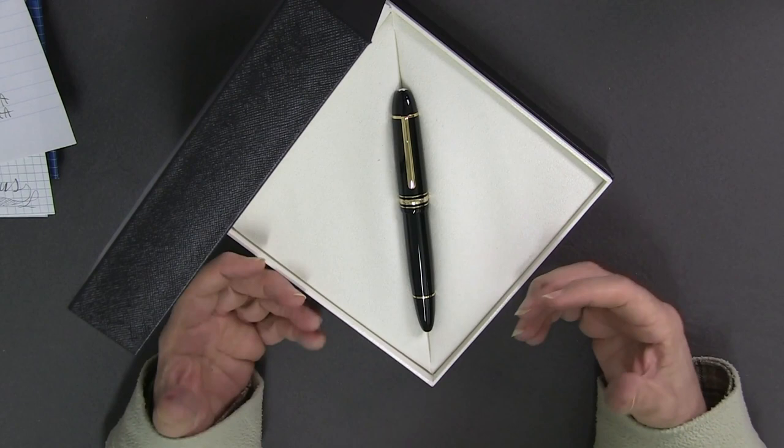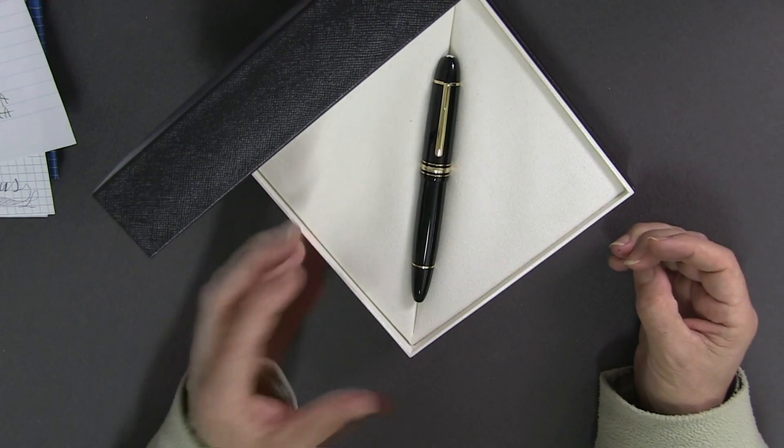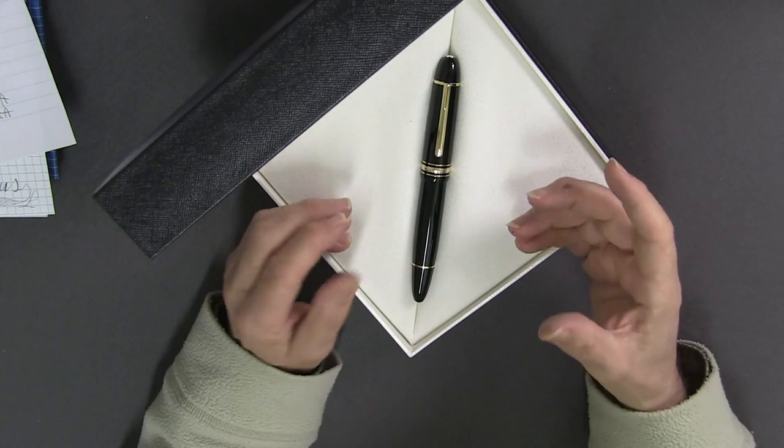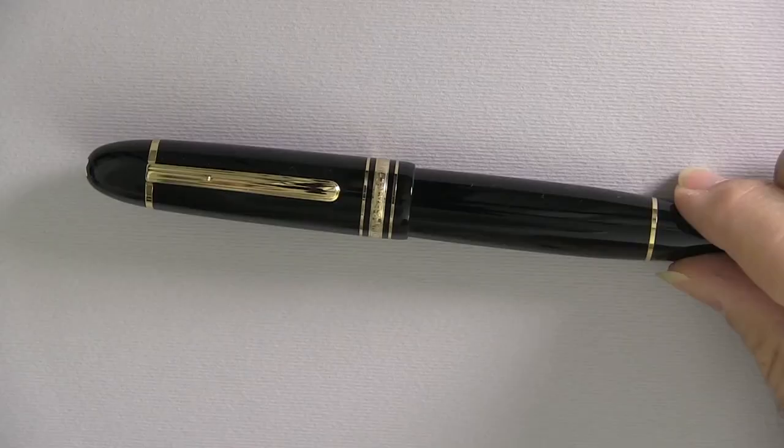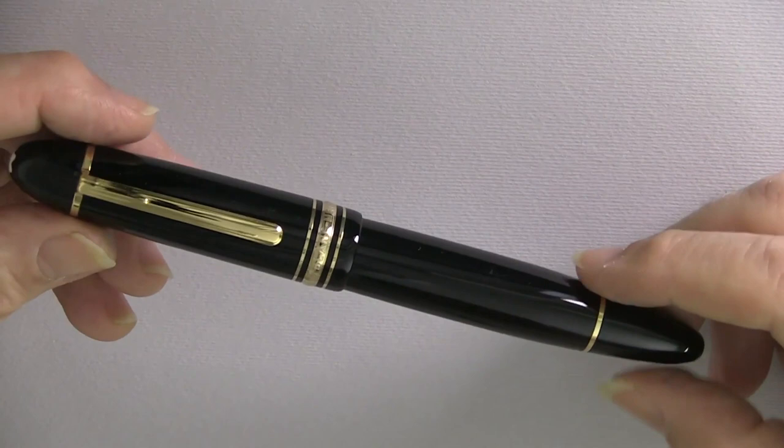The 149 is the biggest Meisterstück series of all, bigger than the 144, the 145 and the 146 Le Grand. It is a classic cigar shape and an imposing tonnage. We don't yet know if Mont Blanc will reproduce the special edition which went on sale immediately, and very few examples remained on the market.